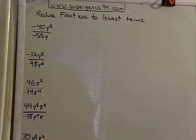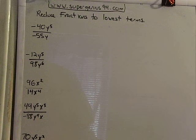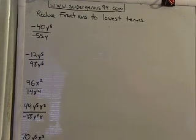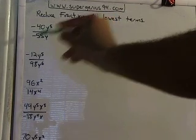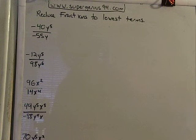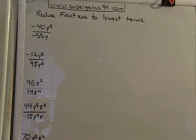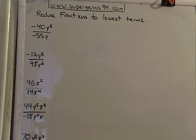So the difference between this and the previous one is now we have some variables in the mix, and we can work with that — it's no big deal. For this first fraction, we have negative 40 over y to the fifth, and the bottom is negative 55 over y. A fraction is kind of like a division, so if you have a negative in the numerator and a negative denominator, it's like a negative divided by a negative, which is positive. So our answer is going to be positive.